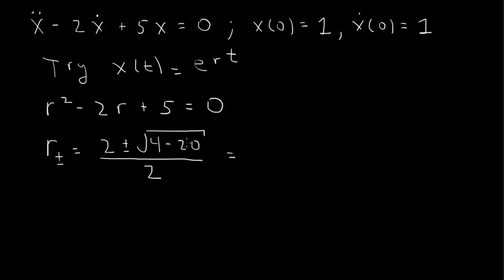This is the square root of negative 16, so that's 4 times i, square root of minus 1, 4i. We divide through by 2, so we have 1 plus or minus 2i.